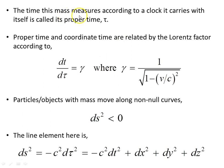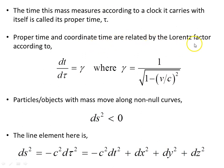The time a mass measures — imagine a spaceship or object moving through spacetime carrying a clock — its own time is called its proper time, symbolised by τ. We explain the motion of light in terms of coordinate time t, while an object with mass records its own time as τ. Proper time and coordinate time are related by the Lorentz factor: dt/dτ = γ, where γ = 1/√(1 − v²/c²).